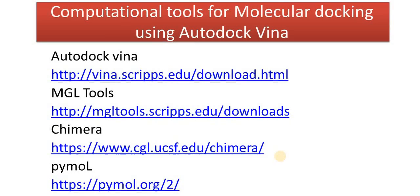The computational tools required for molecular docking using AutoDock Vina are: number one, AutoDock Vina — you can click on the link shown here to download it from Scripps Research Institute. You will also require MGL Tools, which are also called AutoDock Tools, available from Scripps Research Institute. You also require Chimera for structural visualization, energy minimization, and other functions. You will also require PyMOL, Discovery Studio, or any other visualization software to visualize the results.